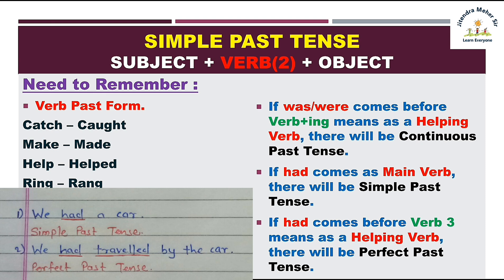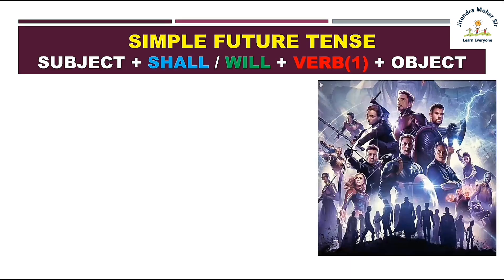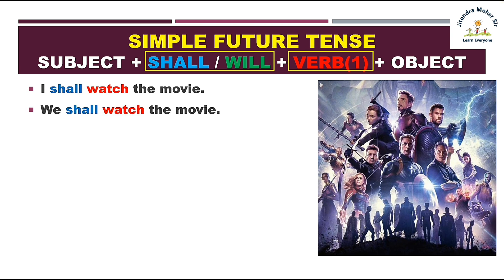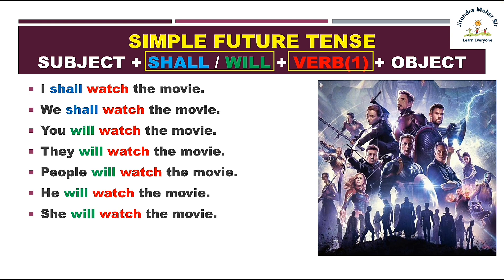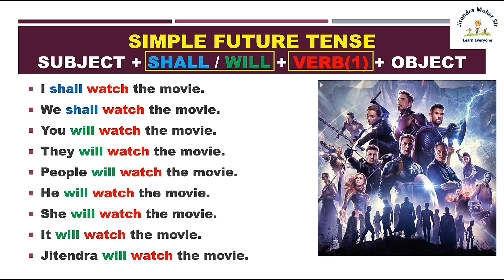Simple future tense ka rule: subject ke baad aayega shall ya will, phir verb ka first form, phir object. Shall aur will ke istamal ka rule: I shall watch the movie, we shall watch the movie — lekin you will, they will, people will, he will, she will, it will, Jitendra will watch the movie. Toh shall ka istamal I aur we ke saath hota hai, aur remaining sabhi pronouns aur nouns ke saath will ka istamal karna hai, followed by verb's first form.